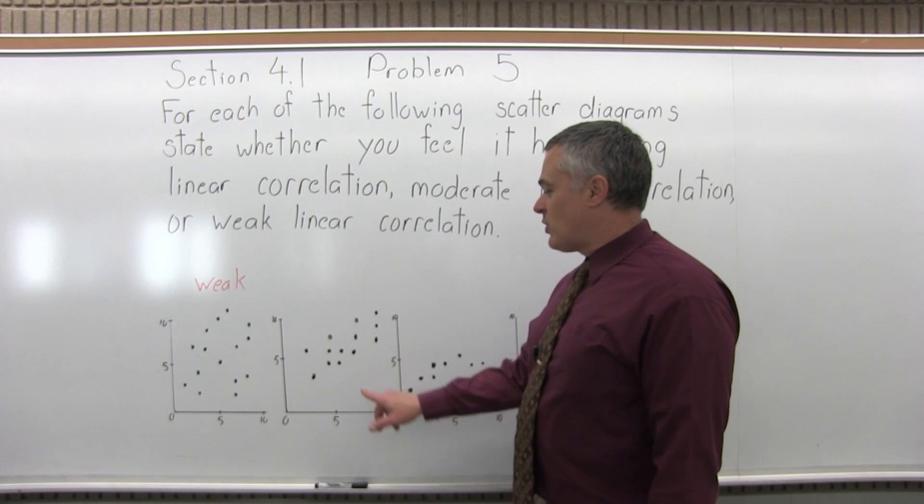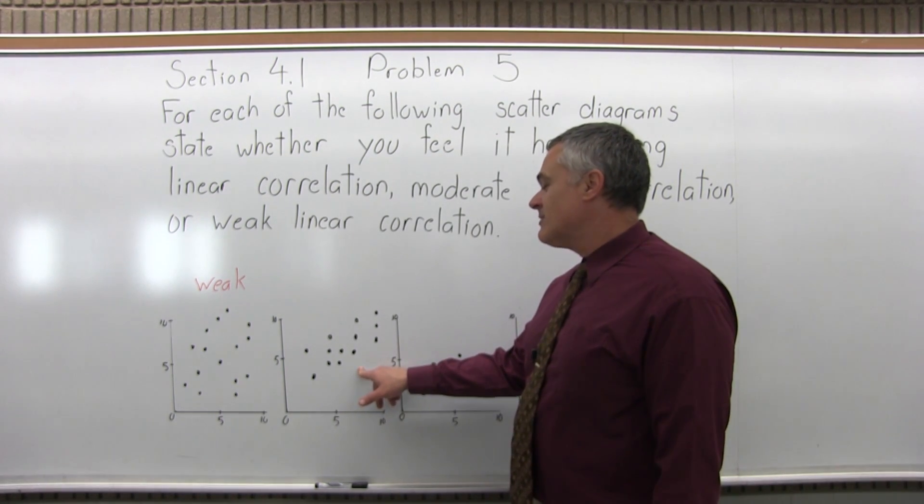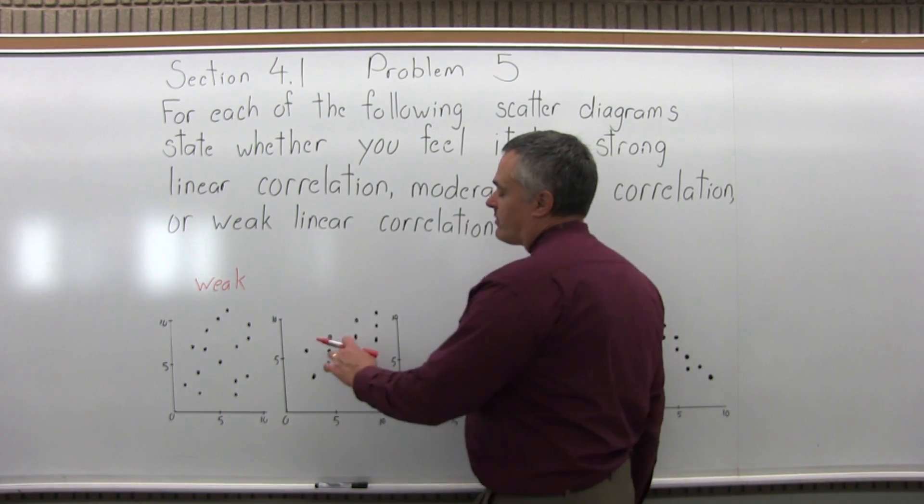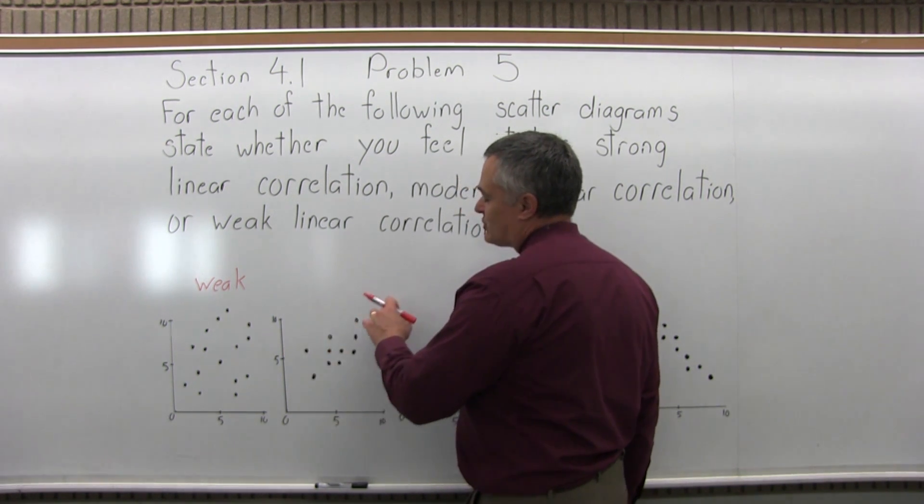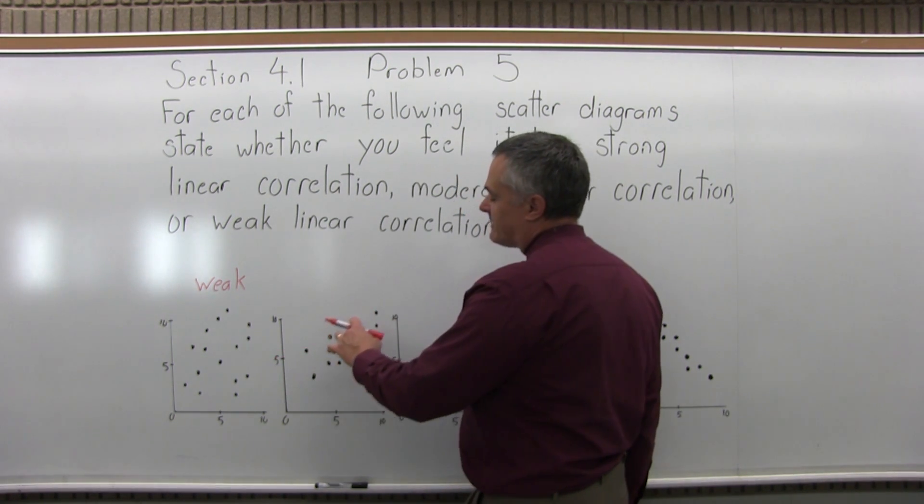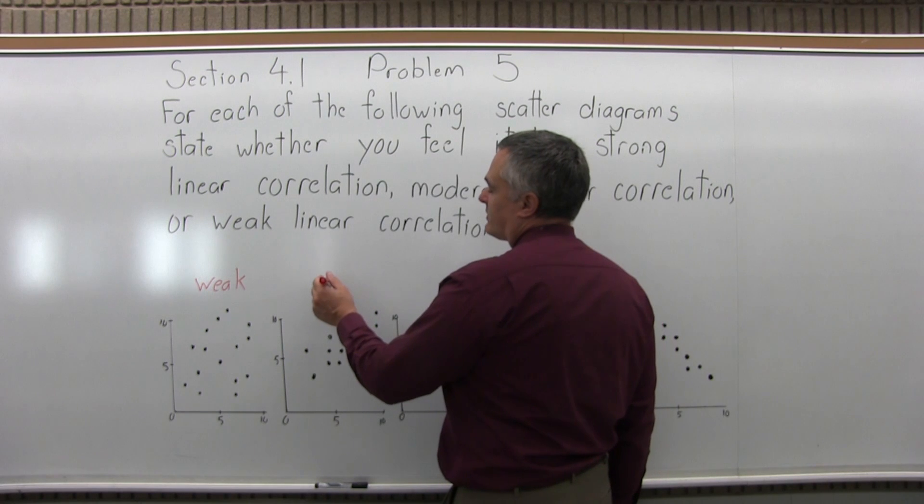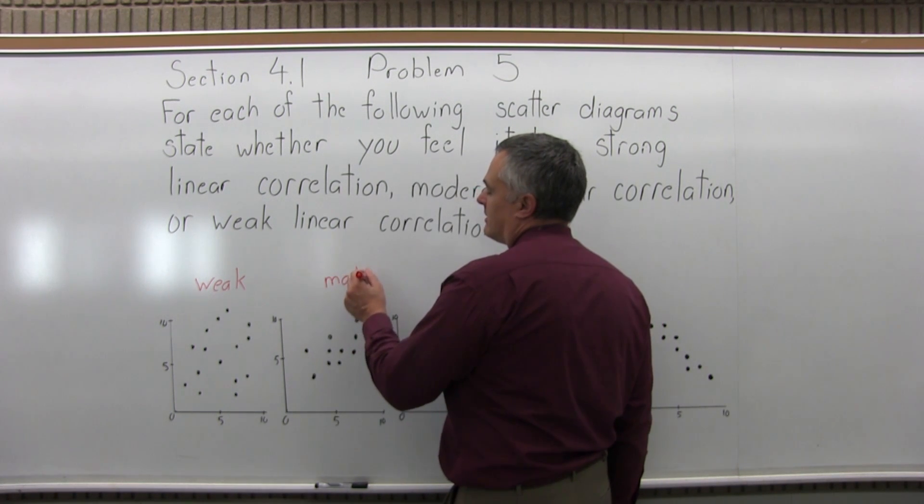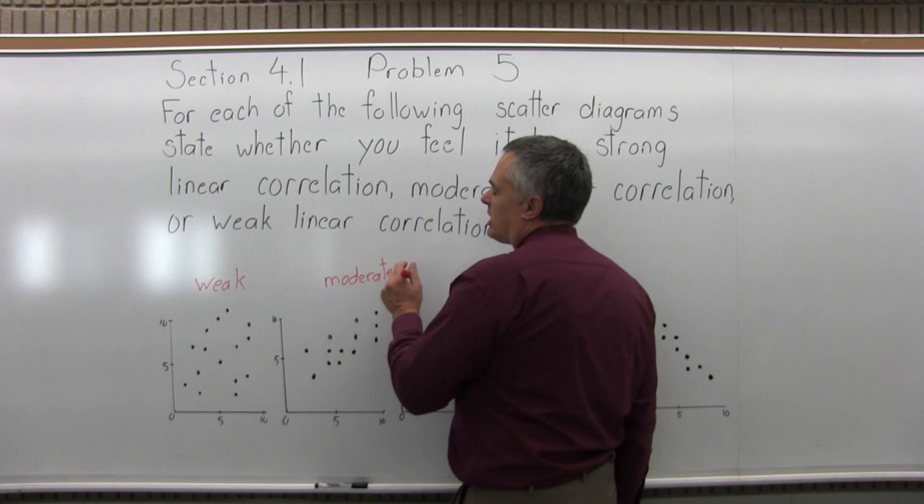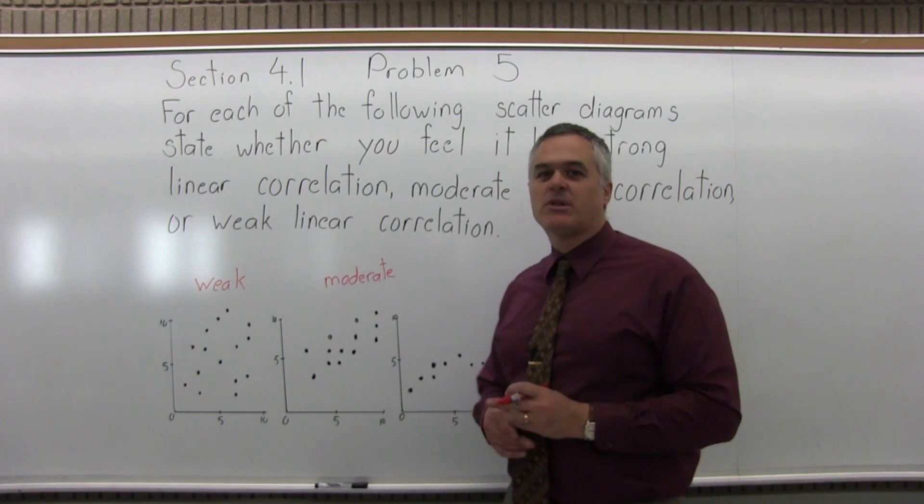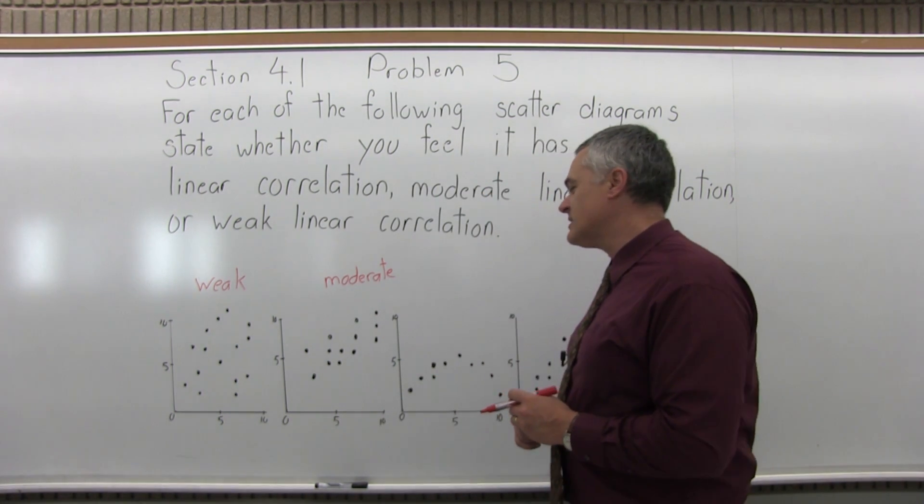The next one, I would say moderate to weak. You can see sort of where the line would go. It does look as if it's going up as you go left to right. So we could call it moderate. I can see some type of linear pattern, but they're still fairly spread out.